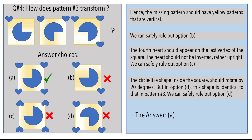Option D cannot be the answer either, as the circle-shaped pattern is identical to that of pattern 3. Hence, the answer is option A. Option A has the fourth heart in the missing vertex, the yellow lines are vertical, and the circle-shaped object is rotated by 90 degrees from that in pattern 3.